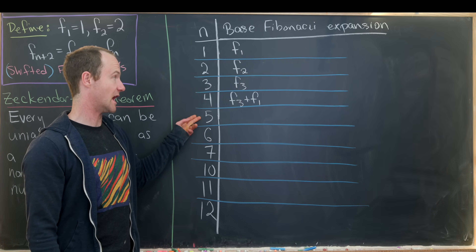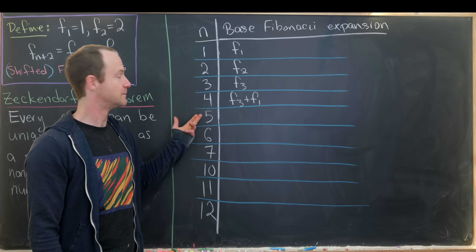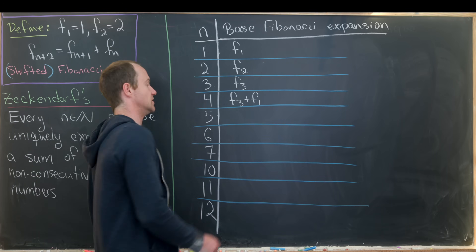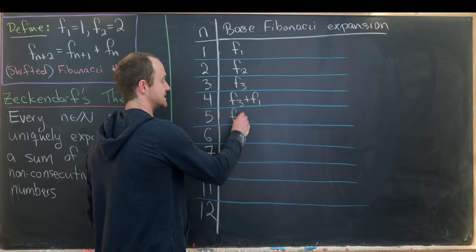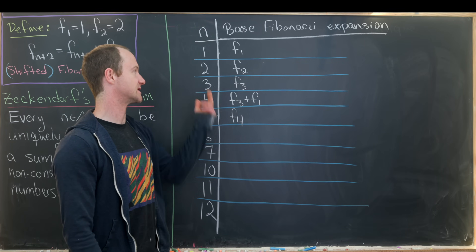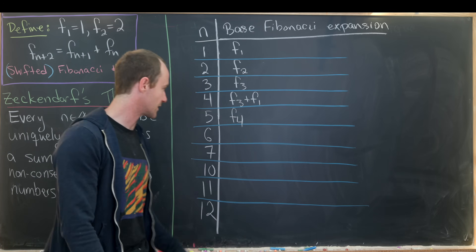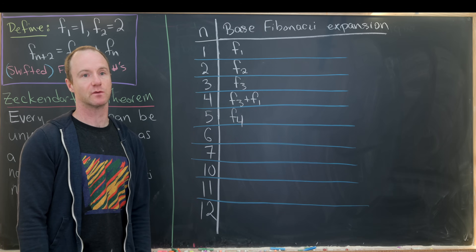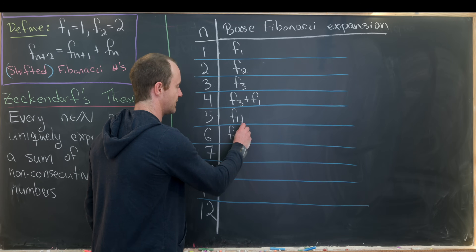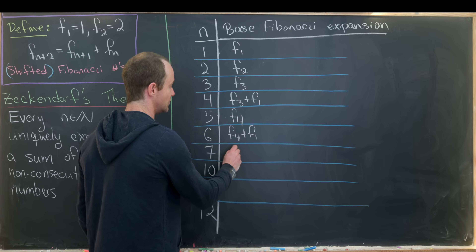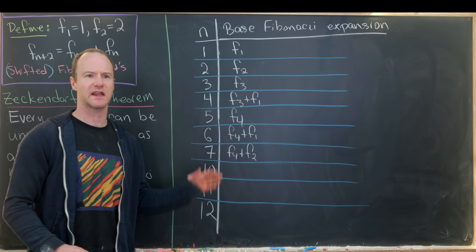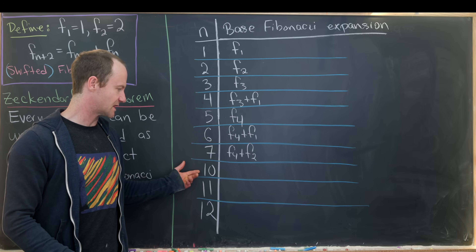Now 5 equals F₄, because F₄ is 3 plus 2. We need these to be non-consecutive: F₃ plus F₂ equals F₄ by the recursion, so 5 is a Fibonacci number and we're done. Then 6 is one more than 5, so F₄ plus F₁; and 7 is two more than 5, so F₄ plus F₂ — still non-consecutive, so we're good.